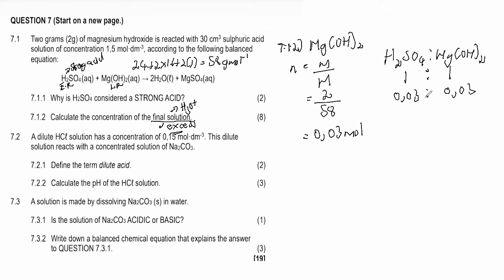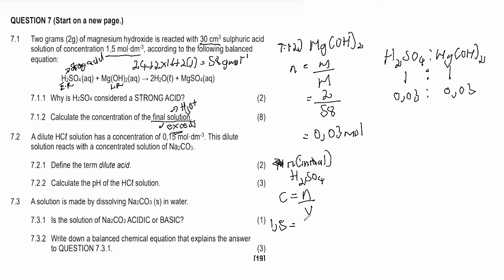We know how much H₂SO₄ reacted, but we also need the initial number of moles. Step three: calculate the initial moles of H₂SO₄. We are given concentration and volume, so using C = n/V: concentration is 1.5 mol·dm⁻³, volume is 30 cm³ converted to 0.03 dm³. Cross-multiplying gives initial moles of H₂SO₄ = 0.05 mol.